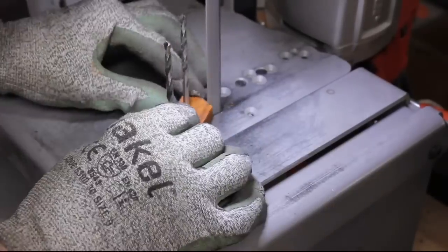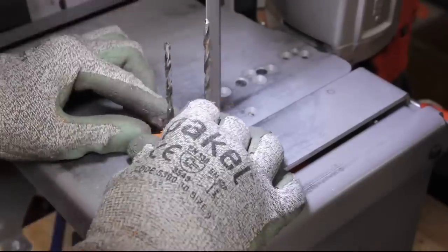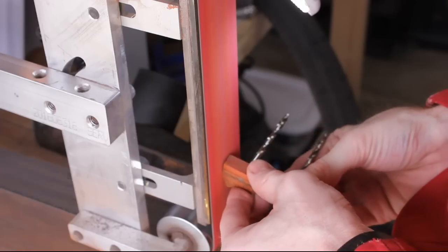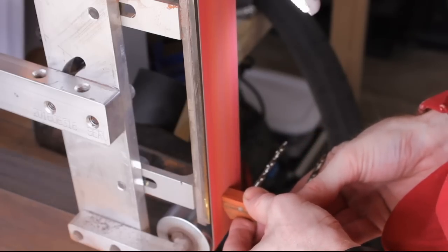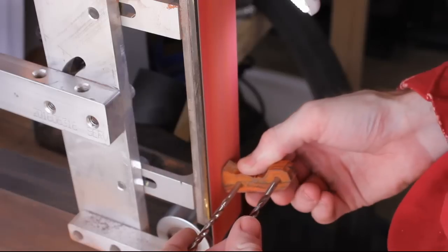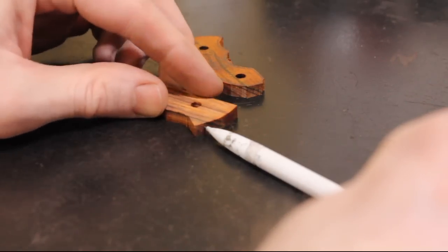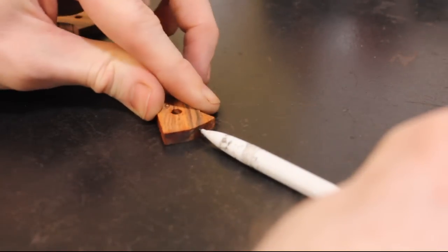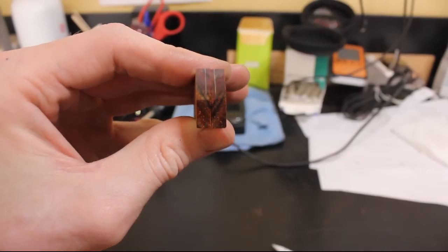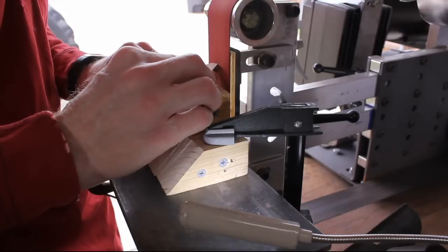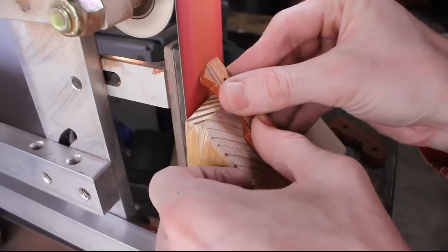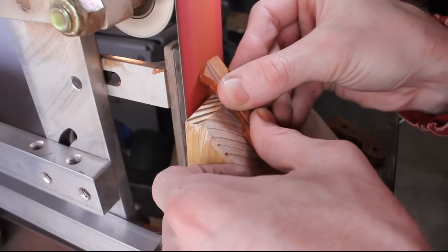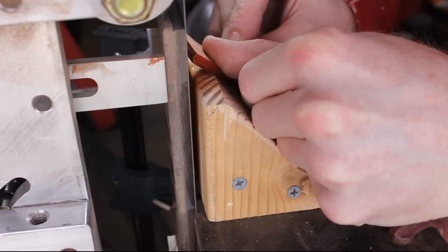With the quench ring going on, we can get back to working on the handle. I'll scribe in some lines on the front of these handle scales so I can grind to those lines with my angle jig. All of the finishing on the front of the handle scales will need to be done in advance before the glue up because you will not have access to the front of the scales after the glue up.